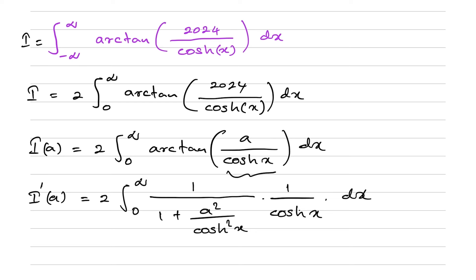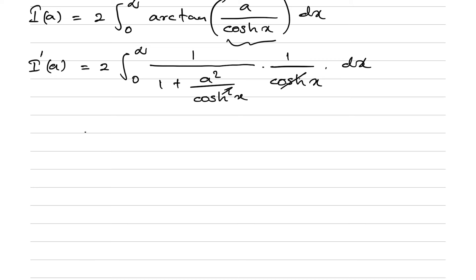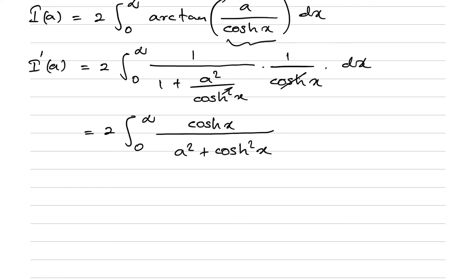After simplification, the cosh(x) terms cancel and we get two times the integral from zero to infinity of cosh(x) over (a² + cosh²(x)) dx. Then we use the hyperbolic identity: cosh²(x) - sinh²(x) = 1, so cosh²(x) = 1 + sinh²(x).